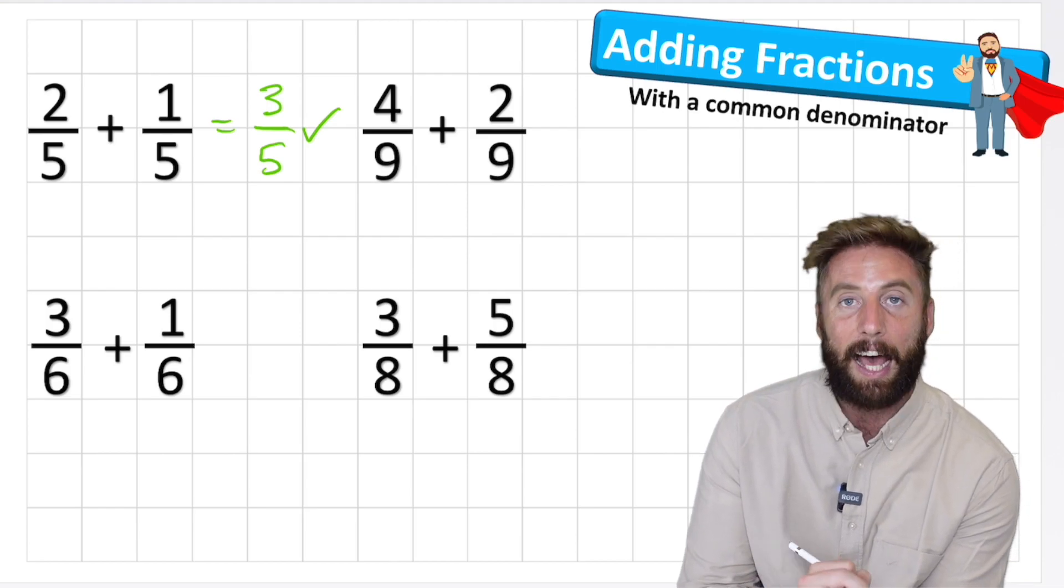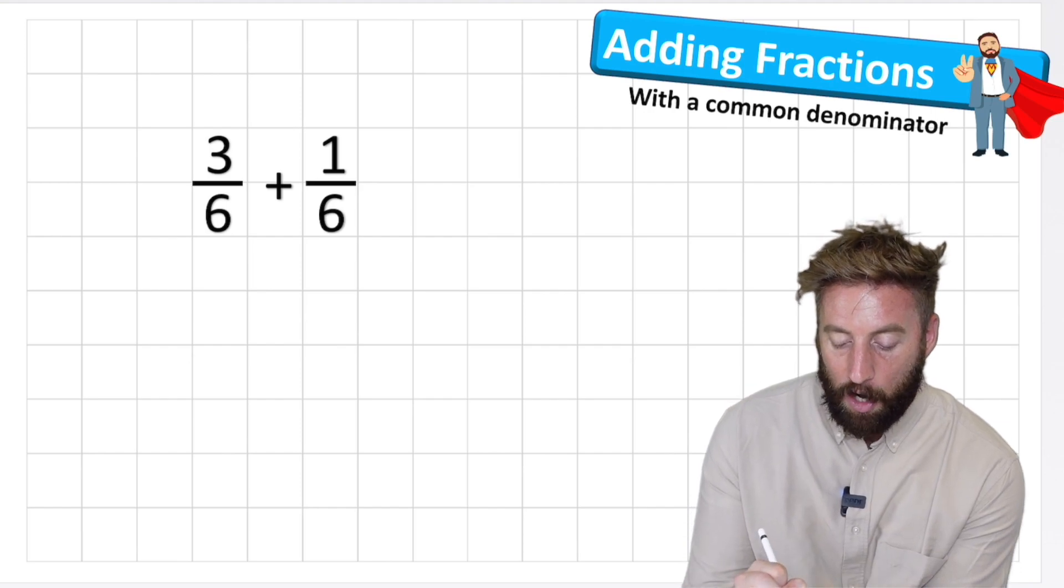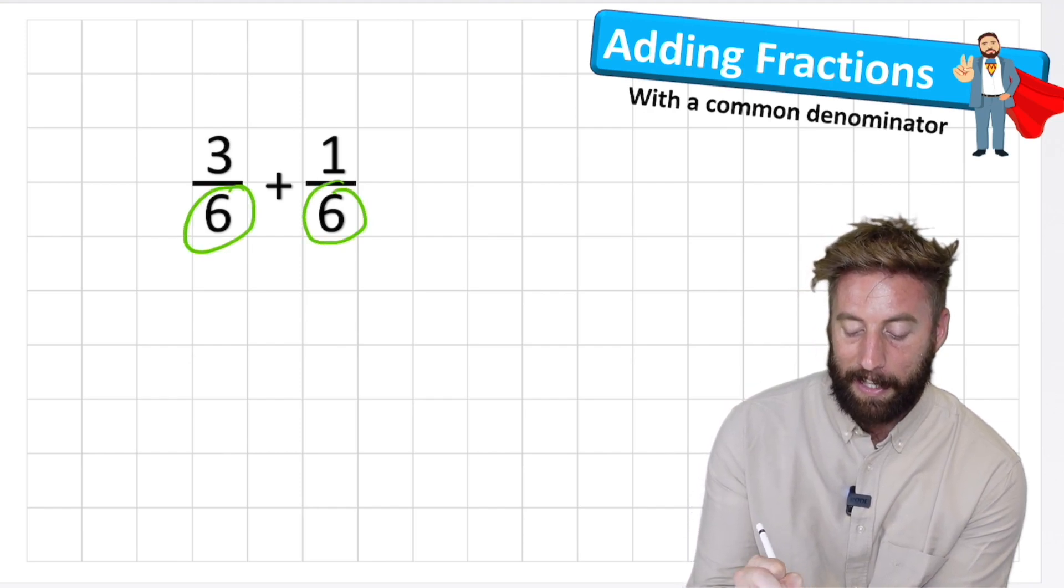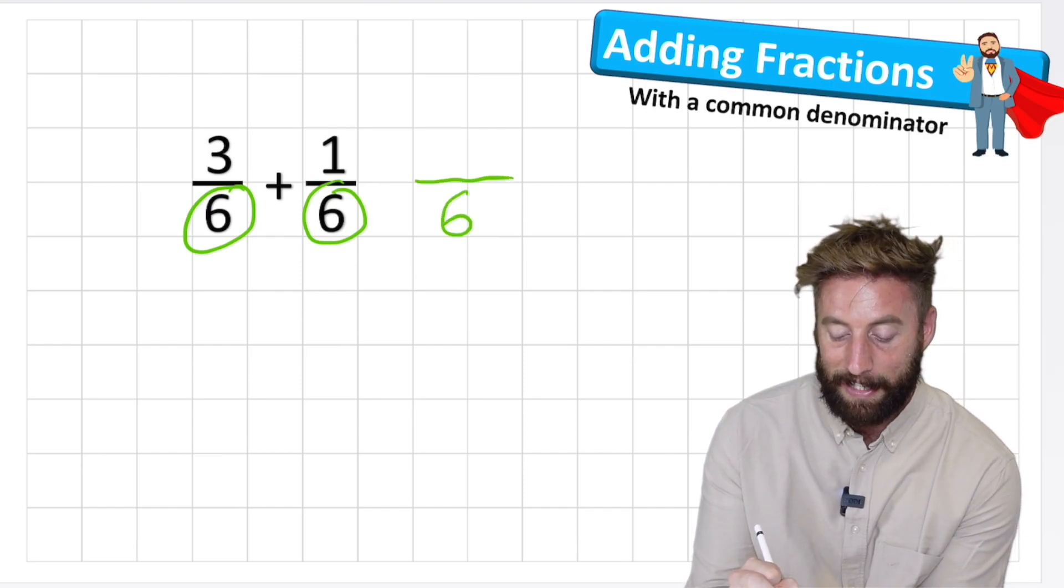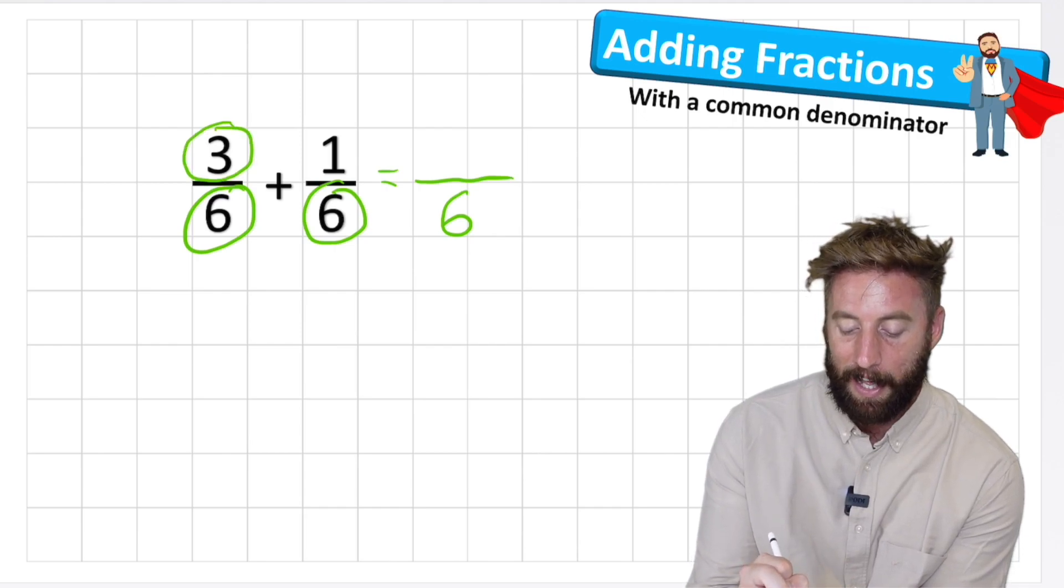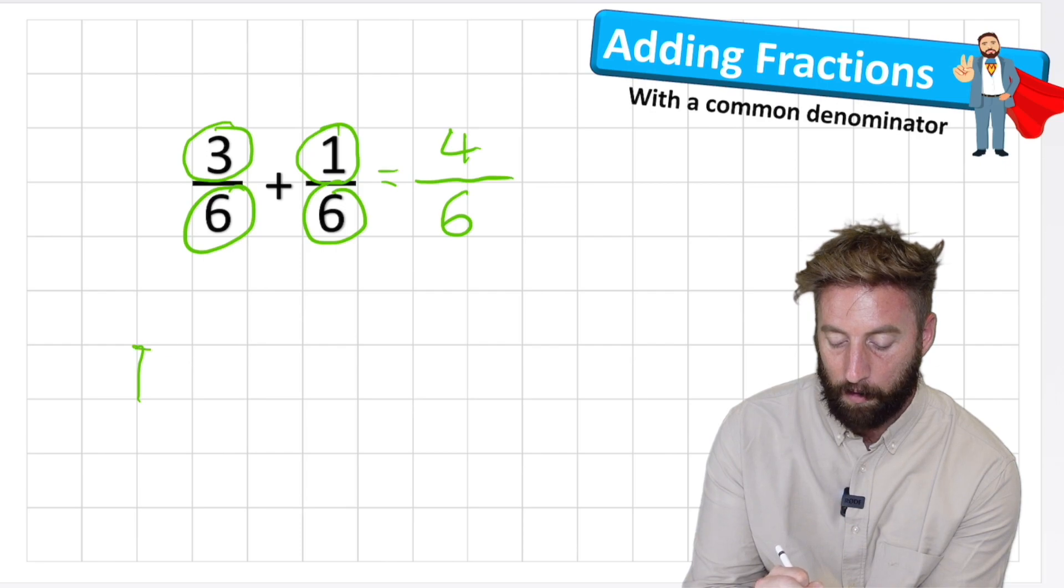Question two, three sixths, add one sixth. Well let's do it in our super quick method now. I know that I'm working with a sixth, I have a sixth here, and a sixth here, so I know that my answer is going to also be in sixths. And how many sixths do I have? Well I have three sixths, add one sixths, which equals four sixths. Let's check it with my bar model, here we go, I'm just going to draw a very rough one for us,